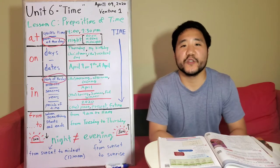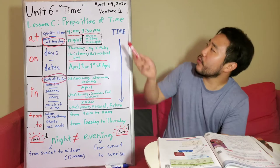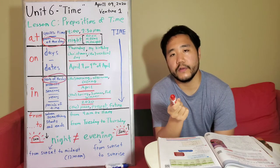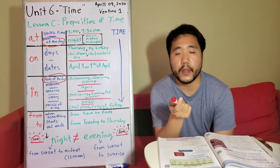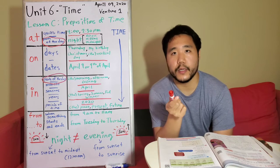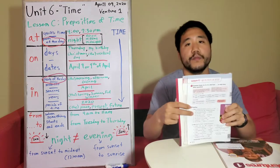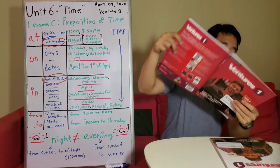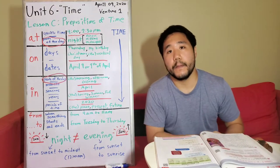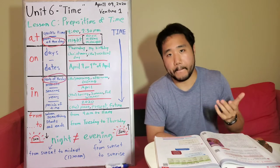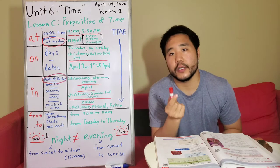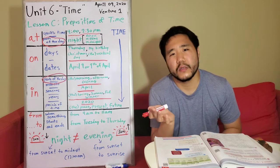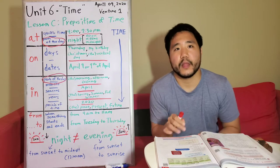Hi, everybody. This is your Venture One teacher, Alex. Today is April 9, 2020. In this video, instead of continuing where we left off, which was Unit 6, Lesson C, Exercise 2B on page 74 of your Venture student book, I will be teaching about prepositions of time in Lesson C again. The reason I'm doing this is to make sure that the students have a complete understanding of this topic, because this topic is difficult. So in a way, I'm reviewing again. Let's begin.